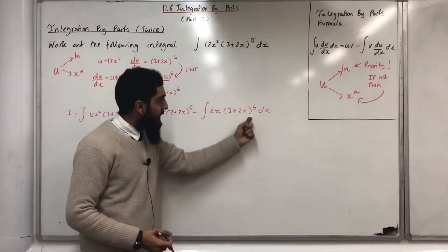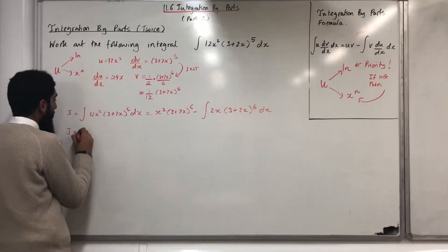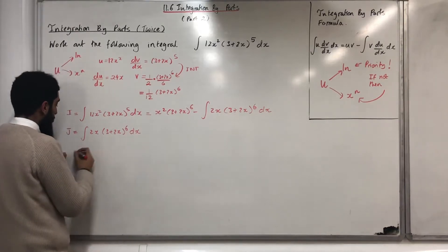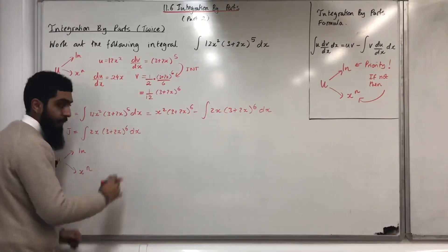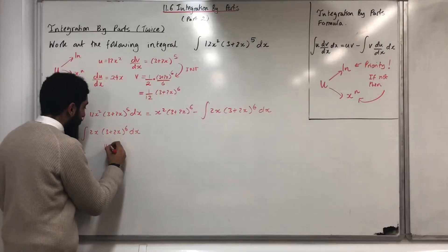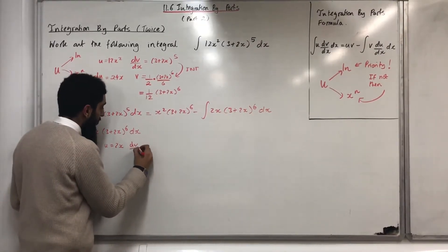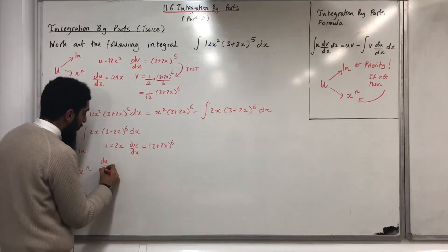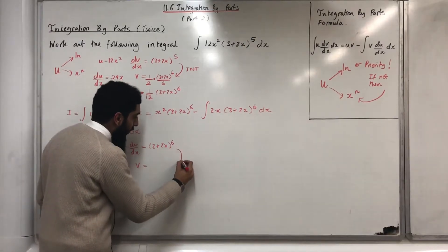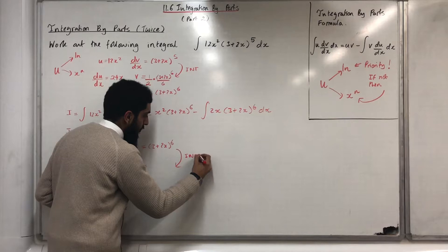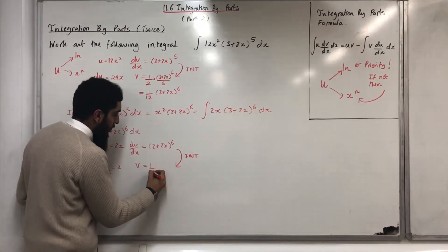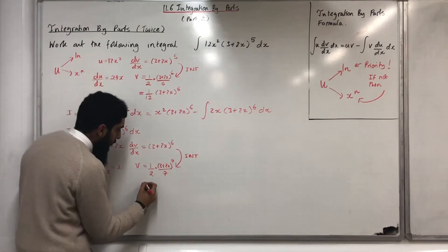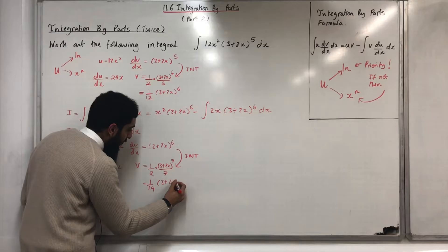I'm going to call this particular integral j. So j equals the integral of 2x times (3 plus 2x) to the power 6 dx. Now, u will be ln if not x to the power n. In this particular case, u will be 2x. Therefore, dv over dx will equal (3 plus 2x) to the power 6. du over dx is equal to 2, and v is obtained by integrating dv over dx, giving me 1 over 14 times (3 plus 2x) to the power 7.